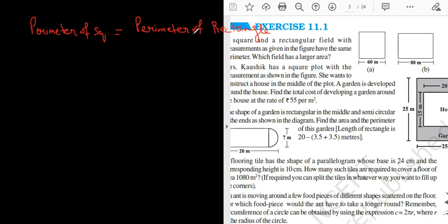We will start like this: perimeter of square equals perimeter of rectangle. Is it making sense, everyone? ATQ means according to the question. According to the question, perimeter of square equals perimeter of rectangle.